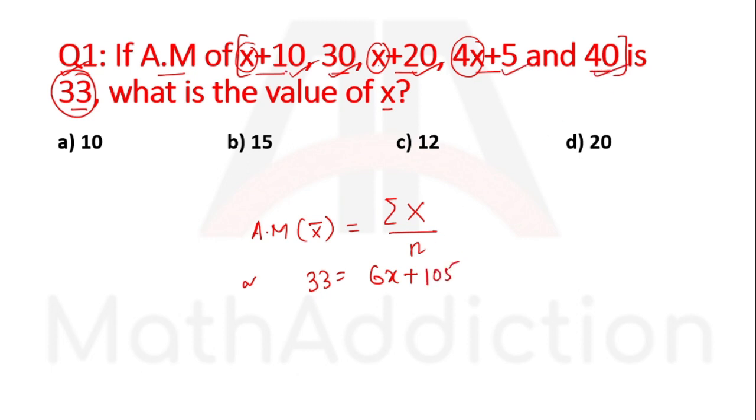10 plus 30 is 40, plus 20 is 60, plus 5 is 65, plus 40 is 105. So 6x plus 105 divided by 5 equals 33. Multiply both sides by 5: 165 equals 6x plus 105. Subtract 105: 60 equals 6x, so x equals 10. Option A is the right answer.